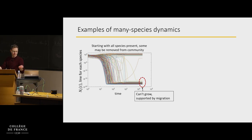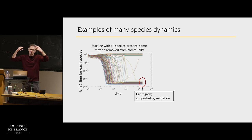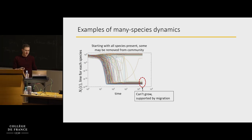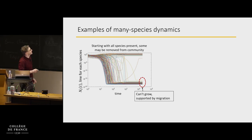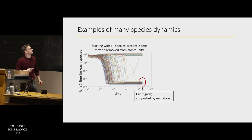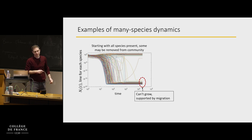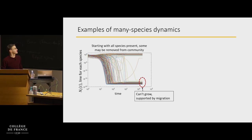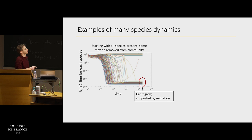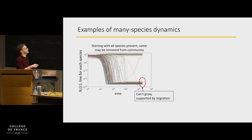You take the equations and run them on a computer starting from some initial conditions. Sometimes, under certain conditions, you see the following: the x-axis is time, the y-axis is population sizes, and each line is one of the species — maybe a hundred species. Some go down, some go up, and after some time they've reached a fixed point. There's a clear division between those with sizable population sizes and those with very small sizes that are only supported by migration.